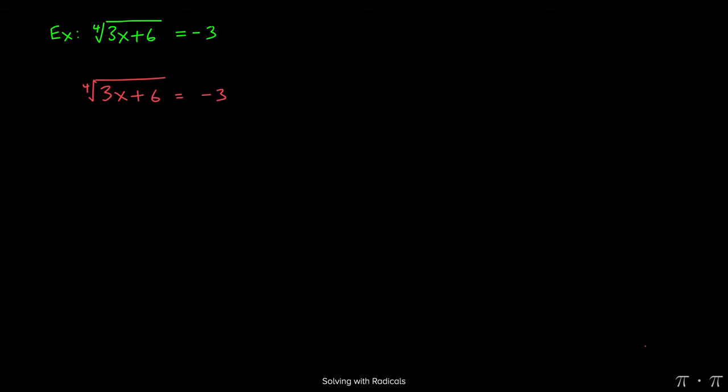We start by recognizing, as before, that we have a fourth root in the problem, so we need to take the fourth power of both sides. We need to raise both sides of the equation to the fourth power to cancel out the fourth root.